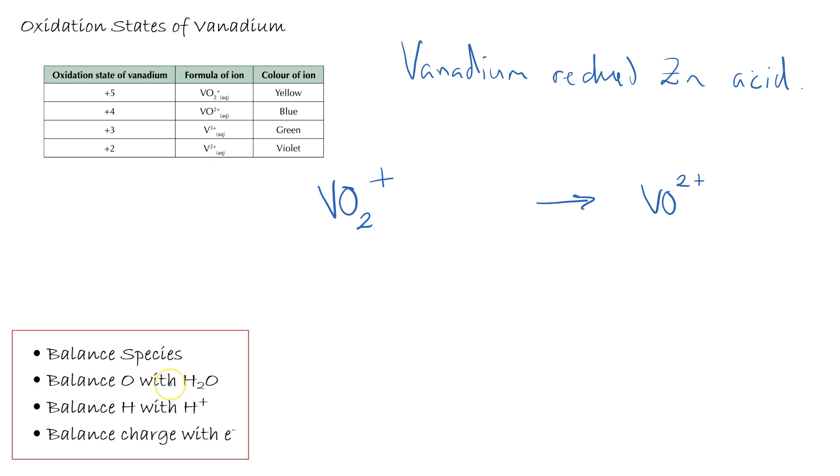Vanadium is one on the left and one on the right so they are balanced. Then we balance the oxygen with water. I've got two on the left so I'm going to add a water to the right hand side to balance up the oxygens. Then I've got two hydrogens on the right and none on the left so I balance with H+. Finally we balance any difference in charge by adding electrons.